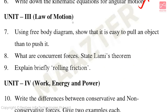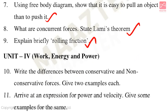Unit 3 Law of Motion — important three-mark questions: Using free body diagrams, show that it is easier to pull an object than to push it. What are concurrent forces? State Lami's theorem. Unit 4 Work Energy and Power: Write the differences between conservative and non-conservative forces — give two examples each. Arrive at an expression for power and velocity, and give some examples.